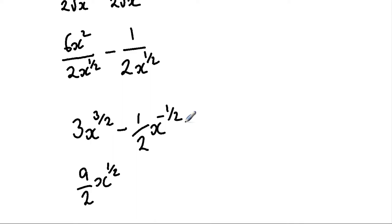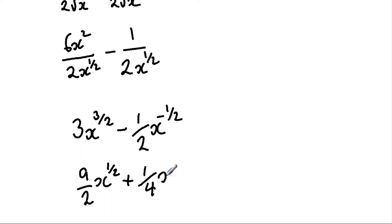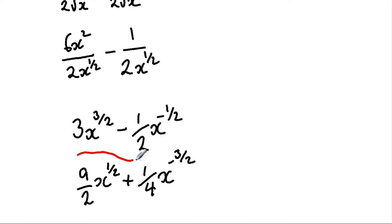For the second term, (1/2)x^(−1/2): multiply −1/2 by 1/2 to get positive 1/4, and subtract 1 from −1/2 to get −3/2. So the second term differentiates to (1/4)x^(−3/2). The final answer is (9/2)x^(1/2) minus (1/4)x^(−3/2).